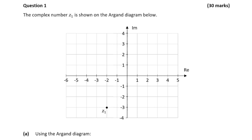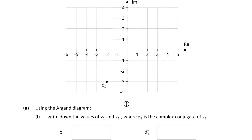Hello and welcome to the video. Matthew here and we're going to look at question 1 which is worth 30 marks. This is a complex numbers question and let's get started on part a. Parts a and b are worth a combined 15 marks and we're asked in part a to write the values of z1 and the complex conjugate of z1.